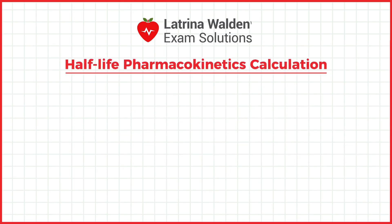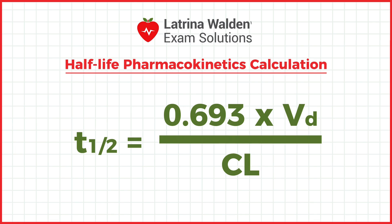How do you calculate half-life in pharmacokinetics? The formula to calculate half-life, T½, is T½ equals 0.693 times VD divided by CL. The calculation requires the volume of distribution, VD, and clearance, CL. The constant 0.693, which is the natural logarithm of 2, represents the exponential rate of elimination, assuming the drug follows first-order kinetics. This tells you how long it takes for the drug concentration to decrease by half.